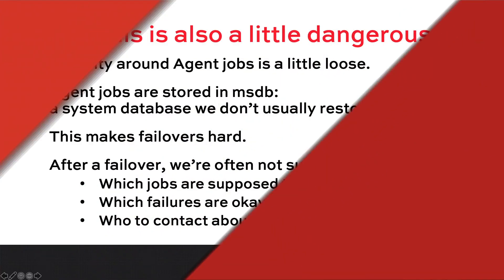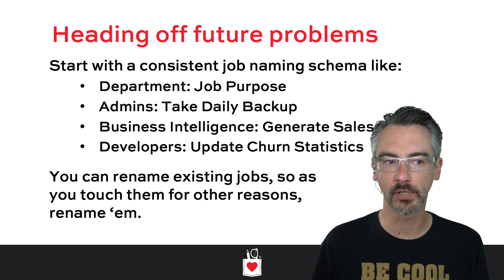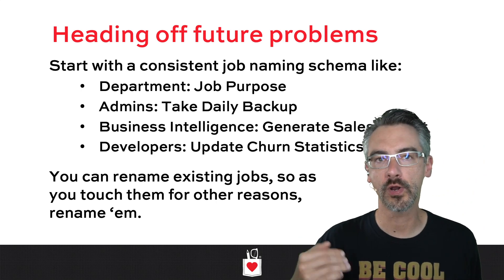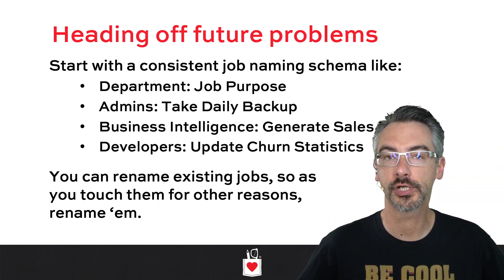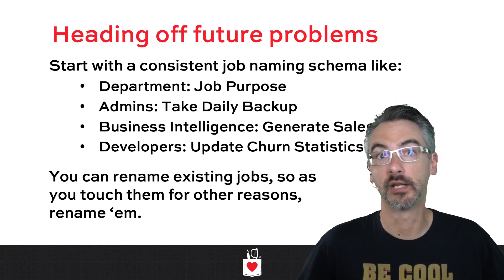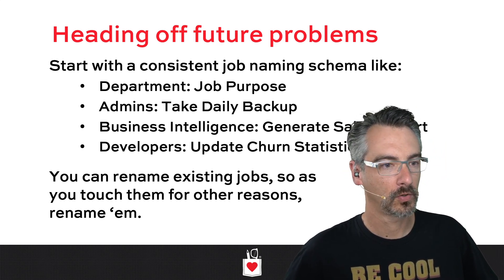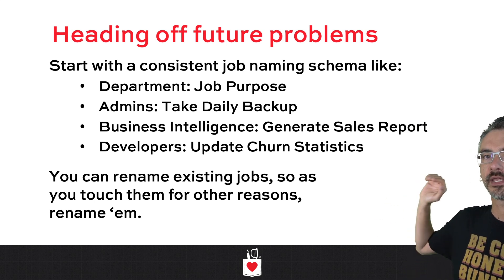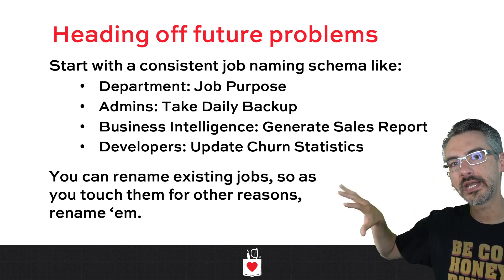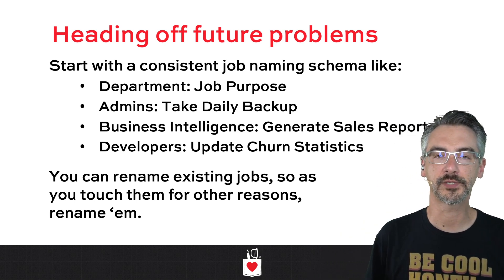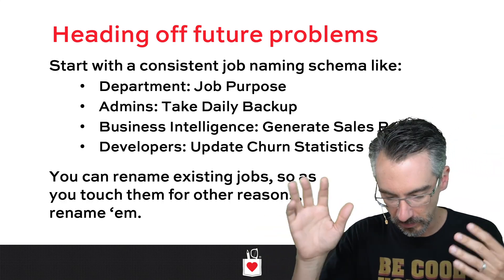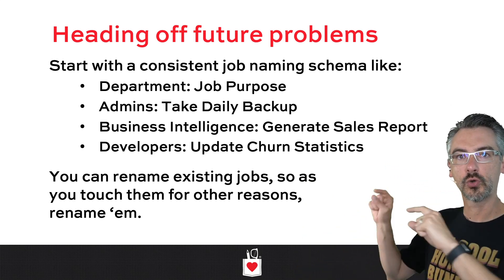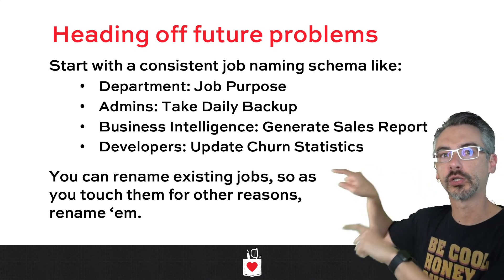My moral of the story: whenever I'm dealing with a SQL Server, whenever I'm taking one over, I want to head off future problems by starting with a consistent naming schema. I want to name every agent job with what department owns it. I'm going to disable any jobs that people don't take ownership of. If you can't tell me who owns it or what it does, it's done. The very first word of any agent job name is going to be the name of the department who owns it. It's fairly safe to rename agent jobs, though technically you can trigger agent jobs by name in code, so there is some risk — but that's fairly unusual.